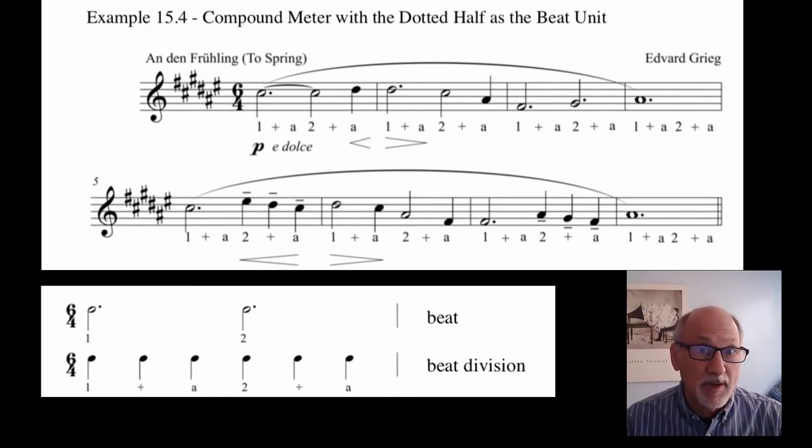To determine the number of beats per measure, divide the top number of the time signature by three, as we did before. As you can see, with the counts placed below the music, there are two beats per measure in 6-4 time.